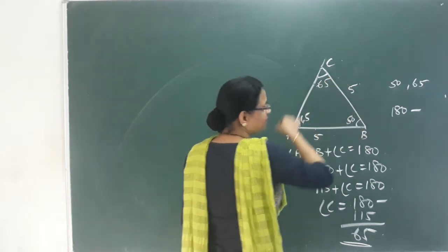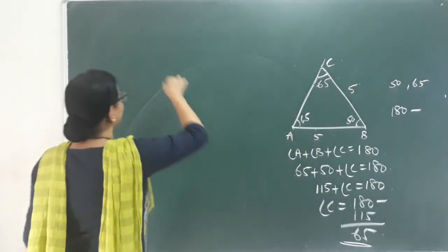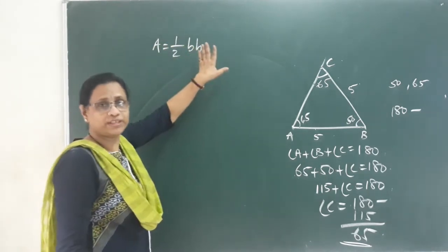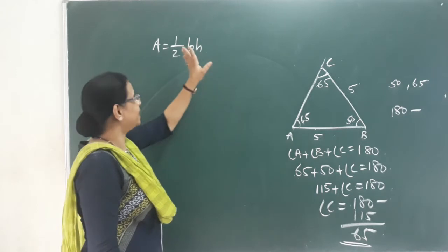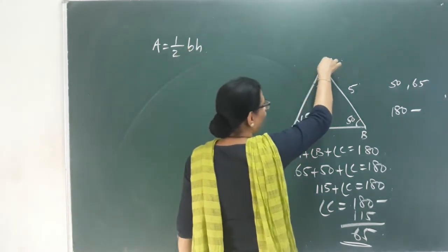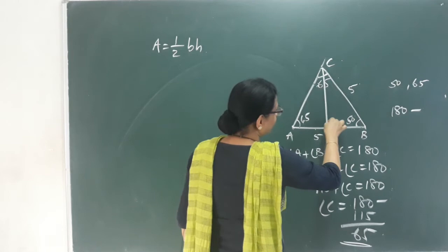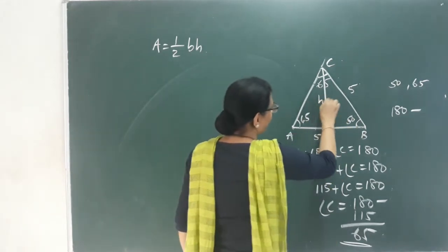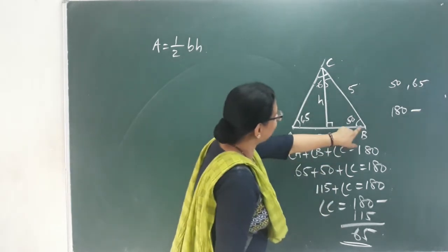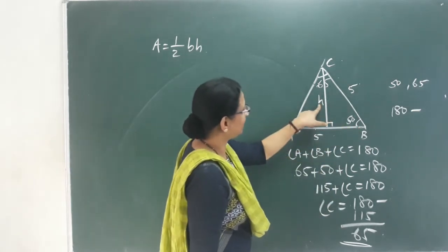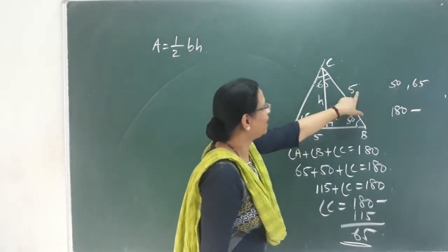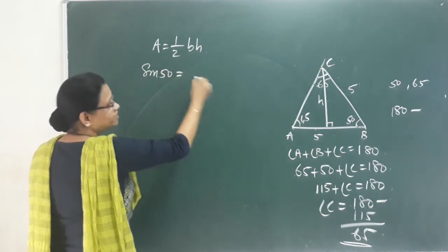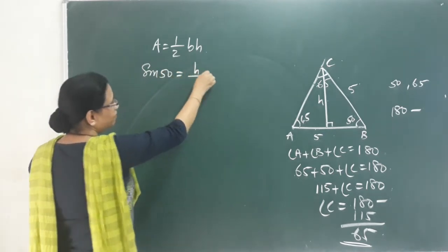This is the area of this triangle. We call it half base into height. I will show you the altitude — that's H. I call it sine 50: opposite side by hypotenuse. Sine 50, opposite side by hypotenuse, by BC.